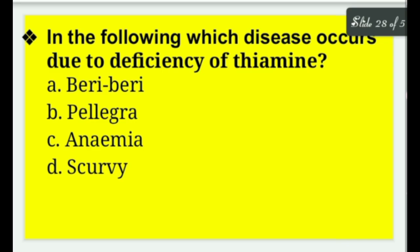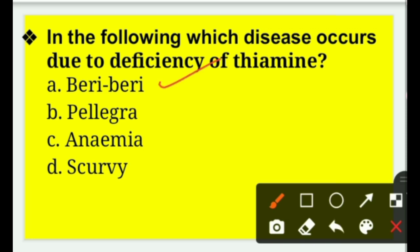Next question: Which disease occurs due to deficiency of thiamine? Options: beriberi, pellagra, anemia, or scurvy. The right answer is option A — beriberi — which is due to deficiency of thiamine, that is vitamin B1. It is caused by poor diet and alcoholism. Thiamine acts as a coenzyme in carbohydrate metabolism and helps in glucose formation through the pentose phosphate pathway.